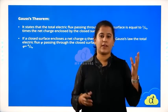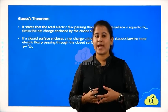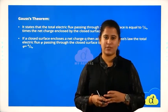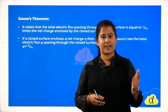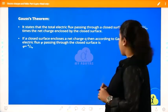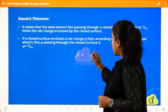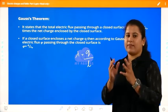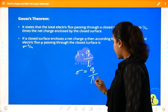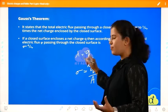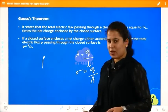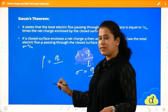Before that, let's have a quick look at what we studied in the previous session — continuous charge distribution. There were three types: linear charge density (λ = Q/L), surface charge density (σ = Q/A, or in smaller quantities dQ/dA), and volume charge density (ρ = Q/V). In differential form, these are written with d — dQ/dL and dQ/dA respectively.